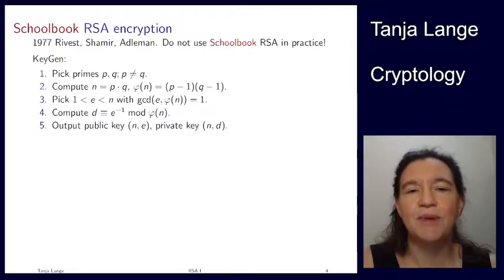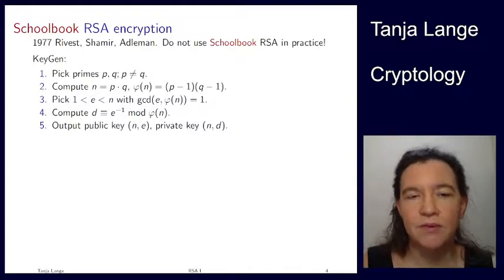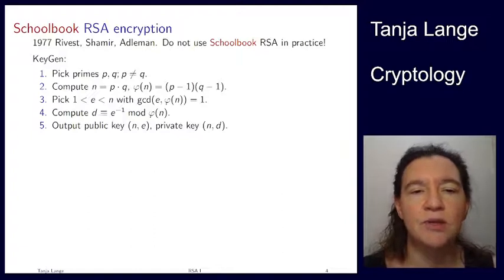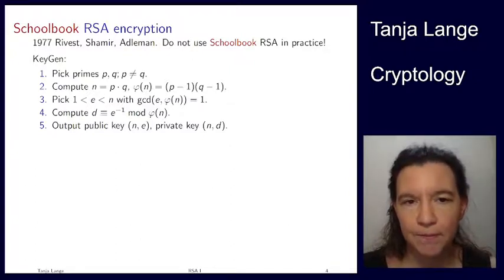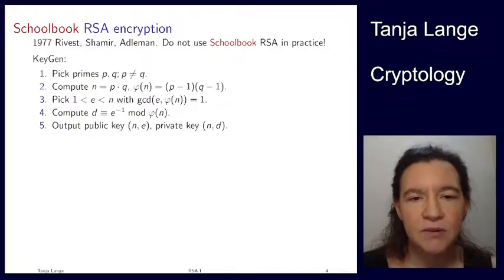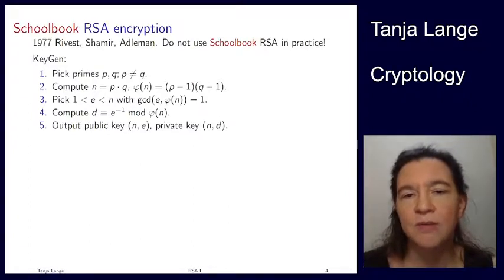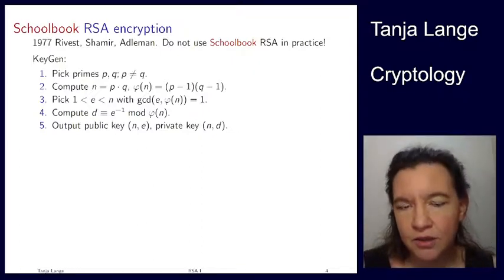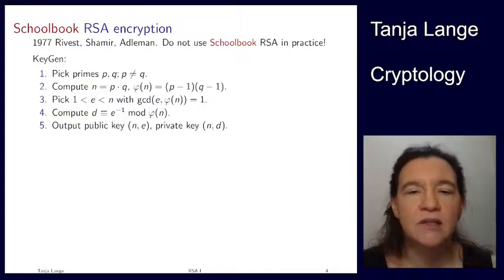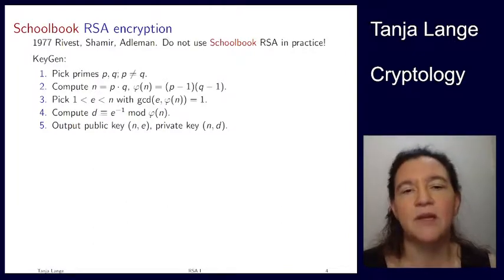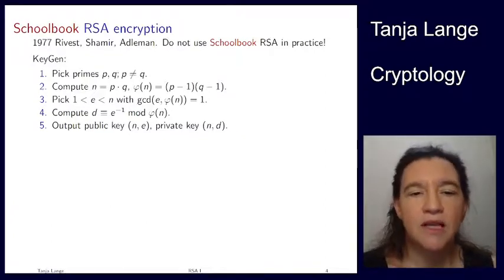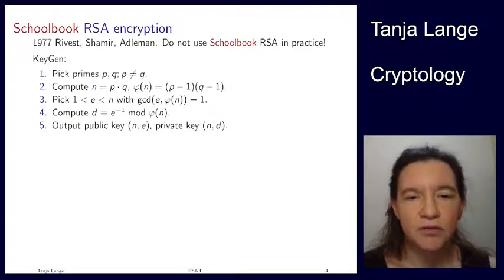Key generation: pick two distinct primes p and q — they must be different, and since they're large random primes, they're sure to be different. Compute n as their product, then compute the Euler phi function phi(n) = (p-1)(q-1). Then pick an exponent e whose only requirement is that it's coprime to phi(n). Since p and q are odd primes, p-1 and q-1 are even, so e must be odd. A typical value is 2^16 + 1, which is a very sparse exponent — we'll see in a moment why this matters.